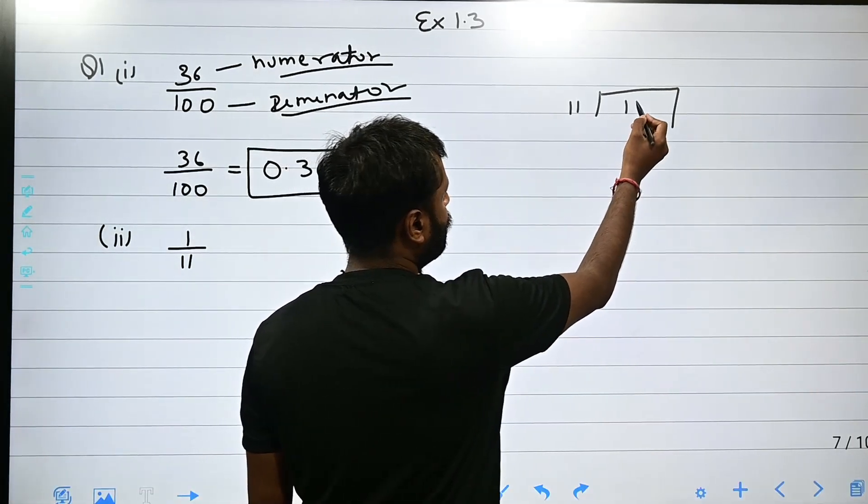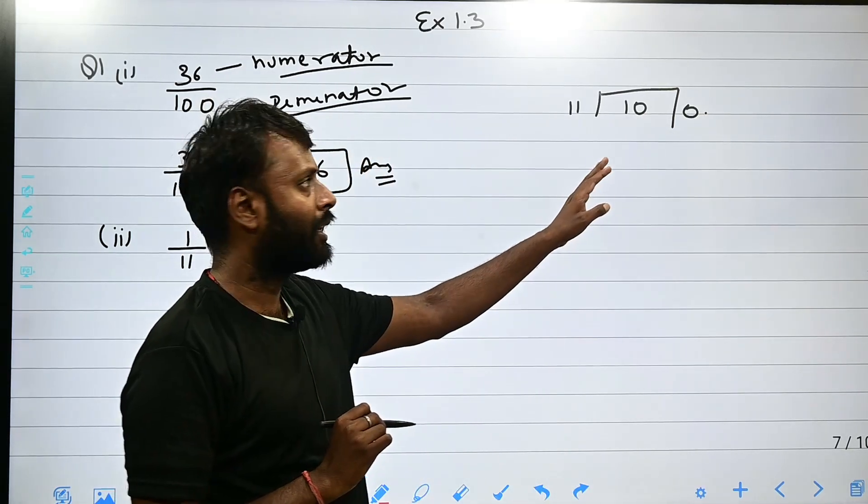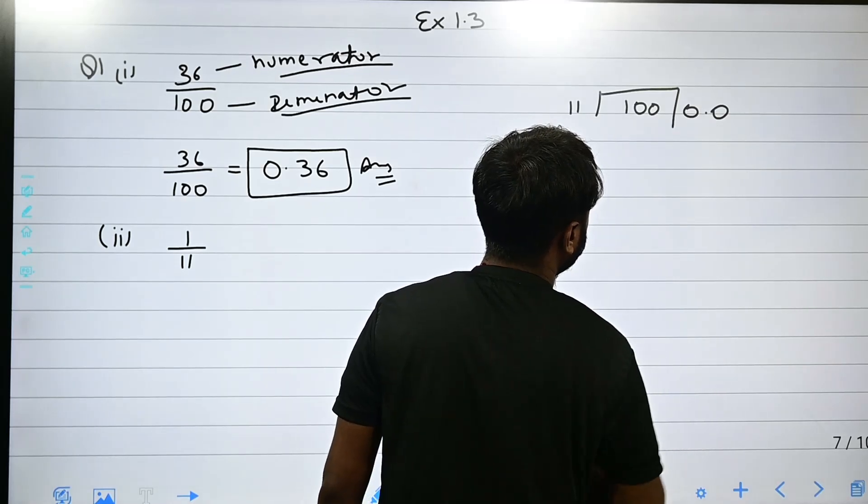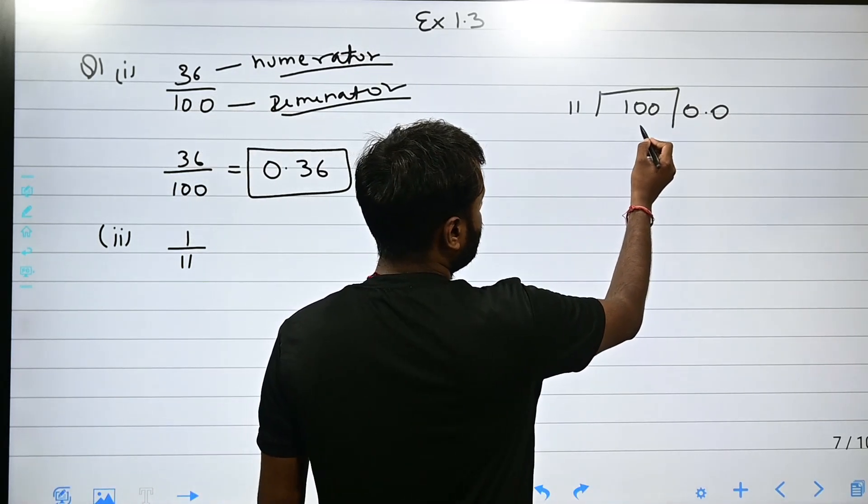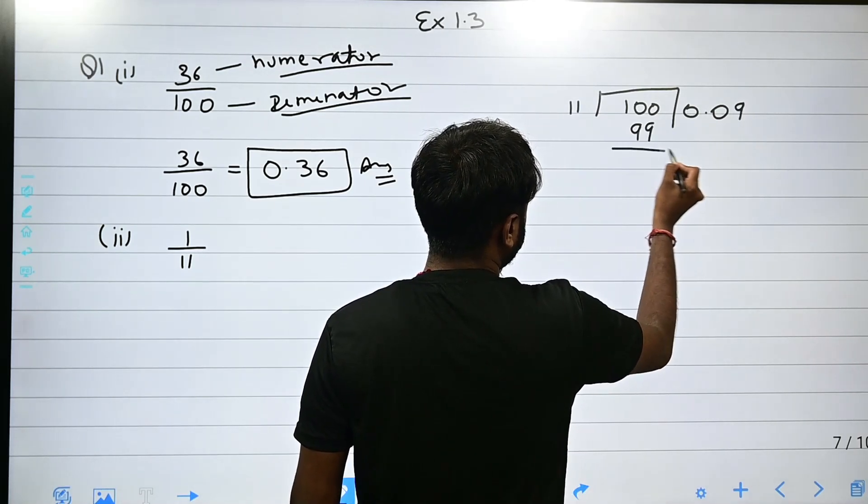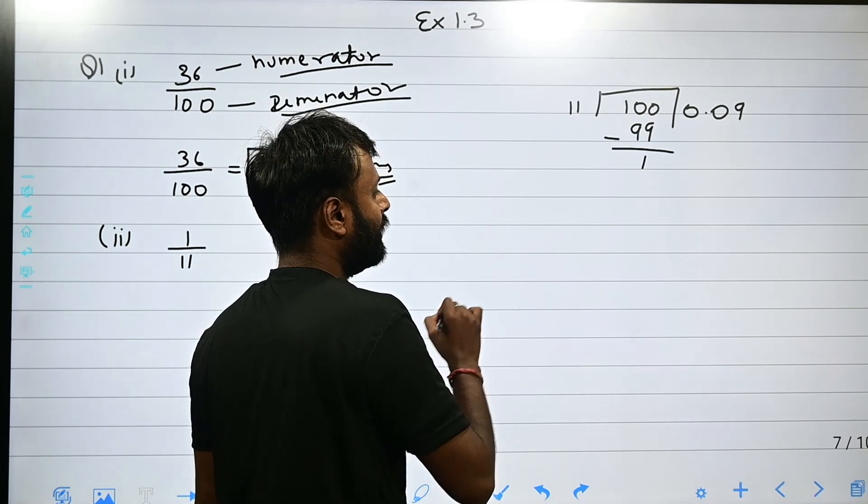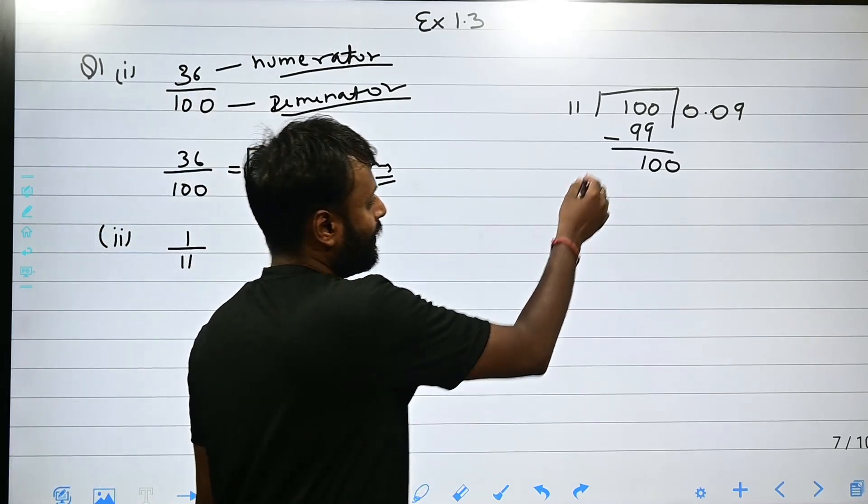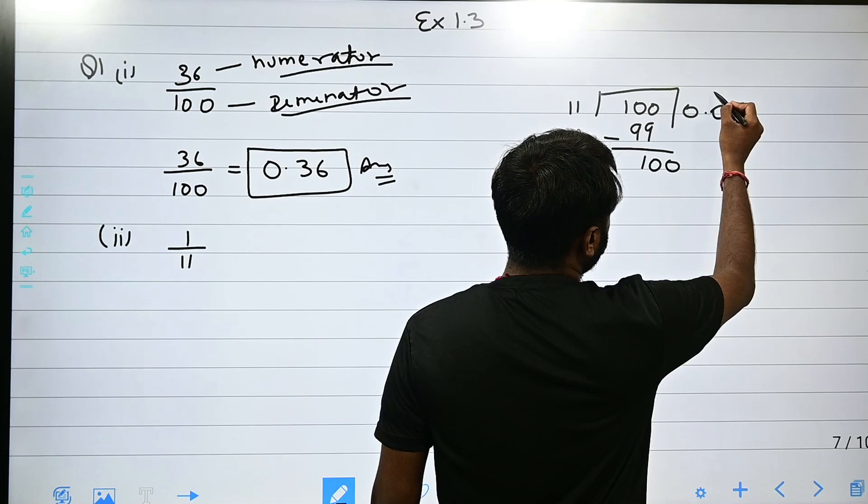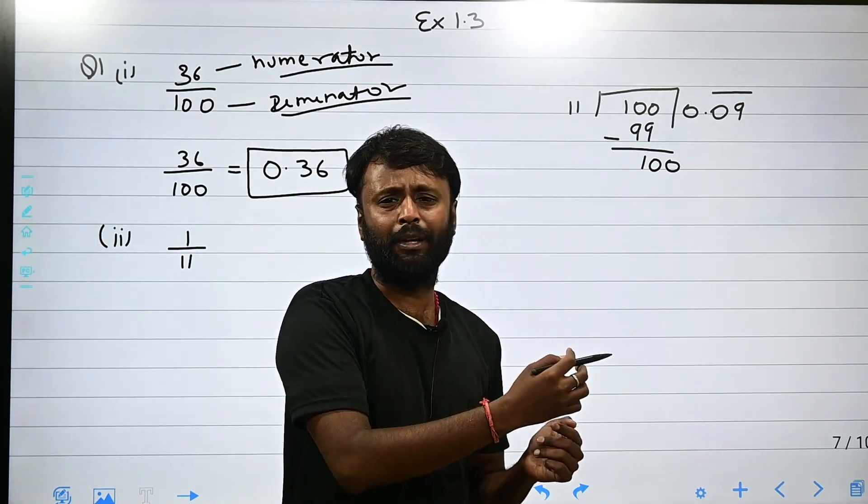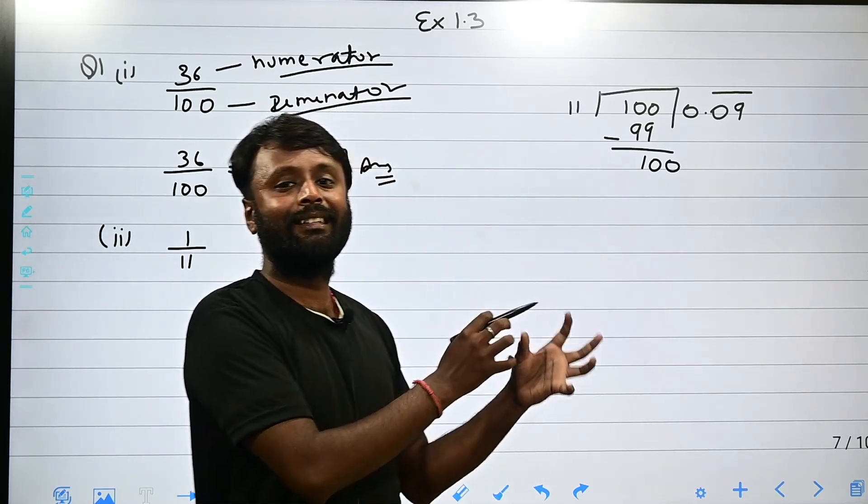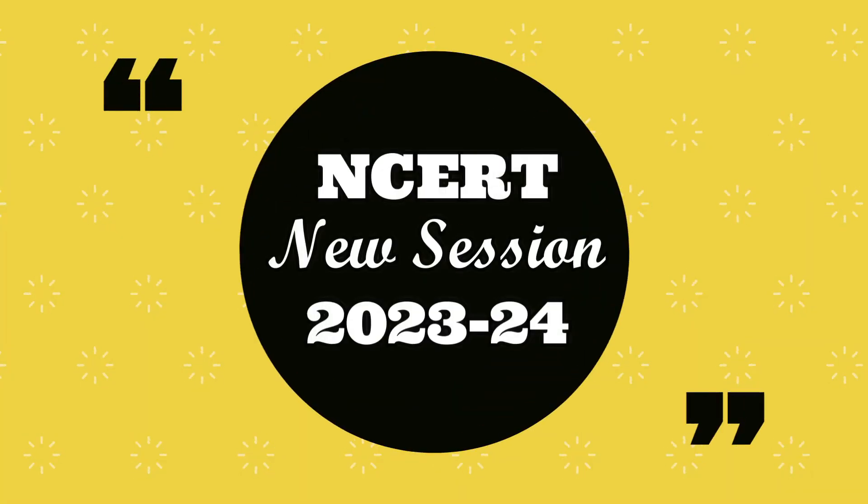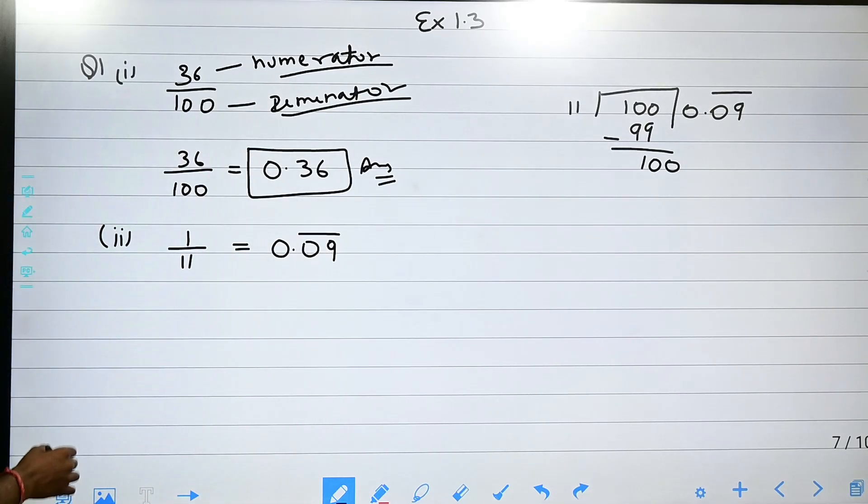We add 1 decimal. Now we add 0. 11 into 10 is 0, we add another 0. Now 11 into 100 is 9, so we write 9. Then minus, we get 1. If I add 0 again, 11 into 10 is 0. At that point, we see that this number 0-9 repeats. So 1 by 11 equals 0.09 repeating. This is your answer.